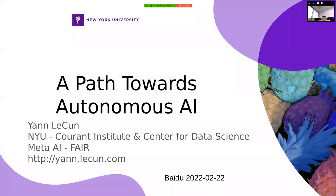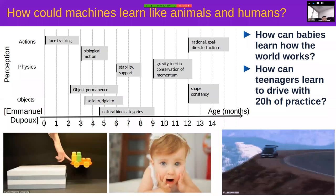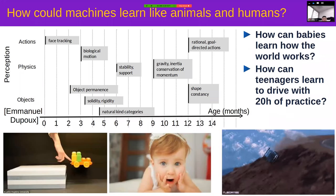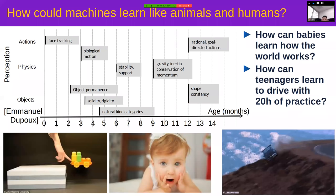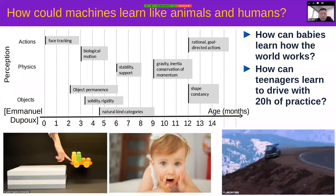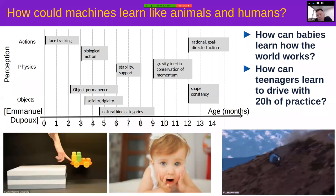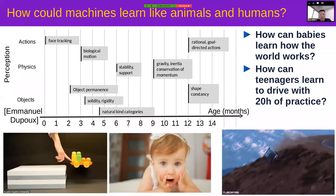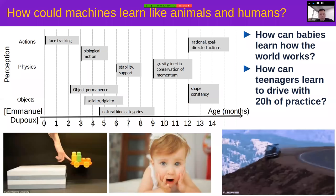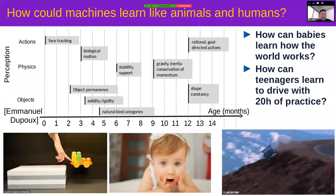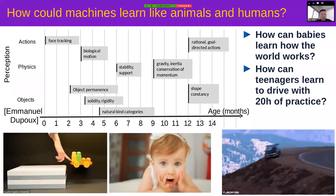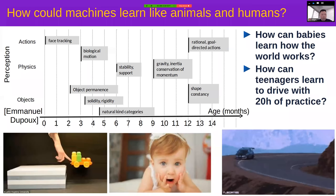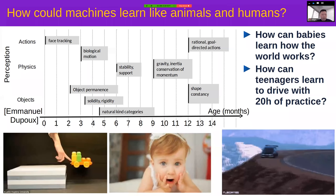What could machines learn, and how could they learn like humans and animals? The first thing we observe is that babies learn how the world works mostly by observation. In the first few months of life they can't act much in the world — they mostly observe — and simply by observing they accumulate an enormous amount of background knowledge about the world in the form of predictive models.